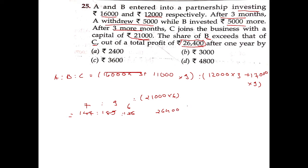Here we find the difference between B and C. B's ratio is 9 out of 22, and C's ratio is 6 out of 22. So the difference is 3 divided by 22. Multiplying: 26,400 × 3/22 gives a profit difference of $3,600.